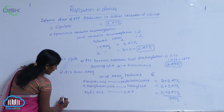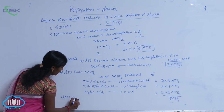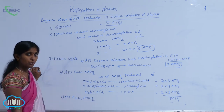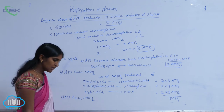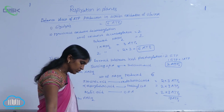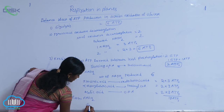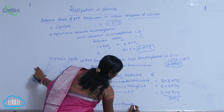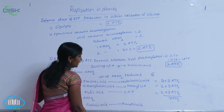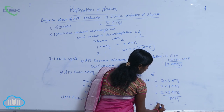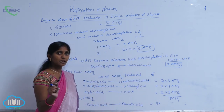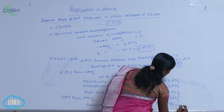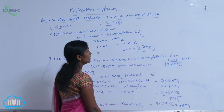Next, ATP is formed from FADH₂. FADH₂ is produced between succinic acid to fumaric acid. How many FADH₂s? 2. For 1 FADH₂, 2 ATPs are released. So, 2 × 2 gives totally 4 ATPs.